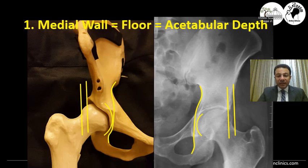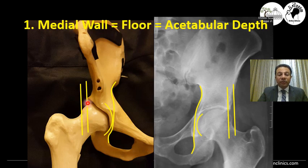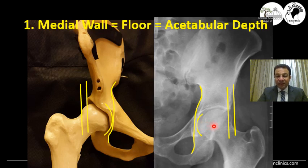The second way to assess acetabulum depth is to see how much of the head is outside the acetabulum — what we name the extrusion index of the head. Normally, about 20% of the head should be uncovered to allow for a good range of motion. If the head is all sinking inside the acetabulum, that means the acetabulum is huge and the head is sinking inside the cave.